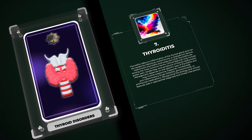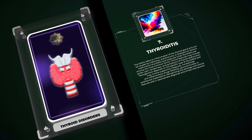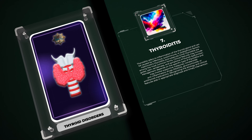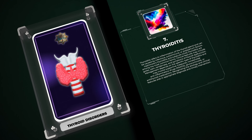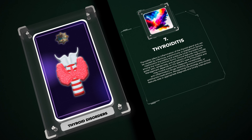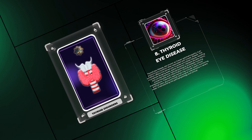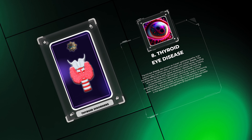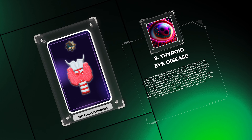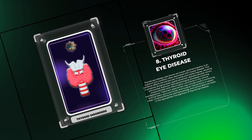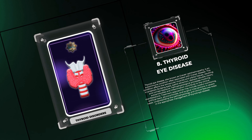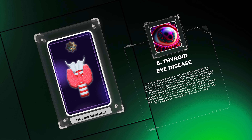Thyroiditis refers to inflammation of the thyroid gland and can be caused by infectious, autoimmune, or postpartum factors. Hashimoto's thyroiditis and subacute (viral) thyroiditis are among the most common forms. Clinical features may include goiter, pain, tenderness, and symptoms of thyroid dysfunction. Management depends on the specific type and may involve supportive measures, NSAIDs, glucocorticoids, or antithyroid medications.